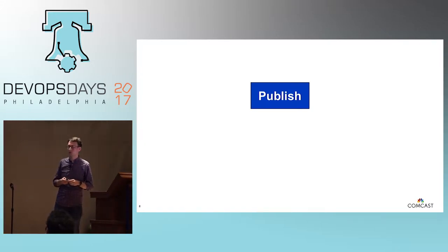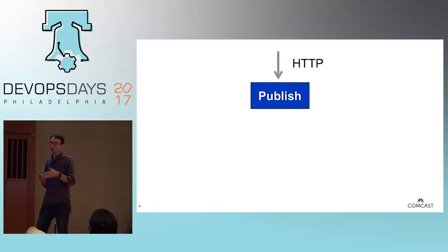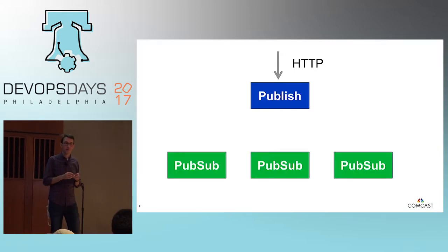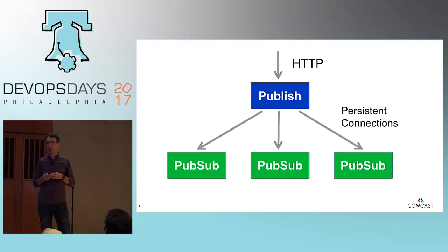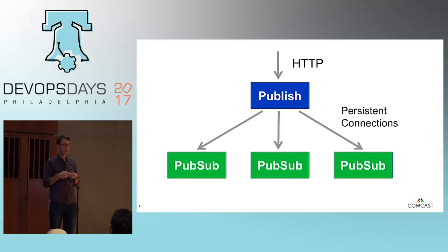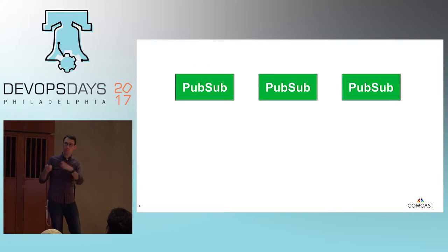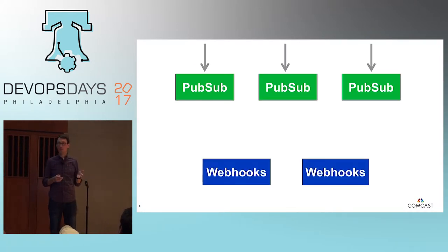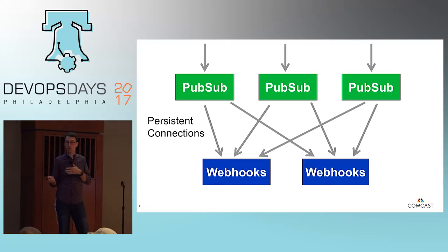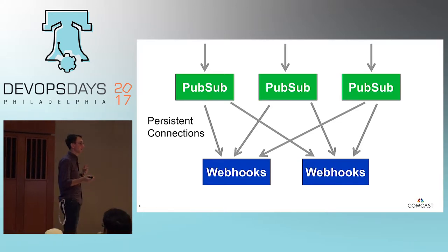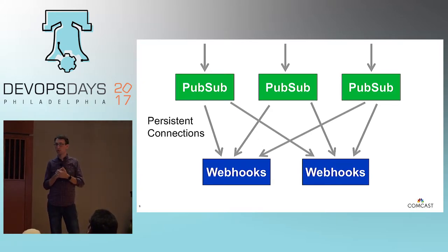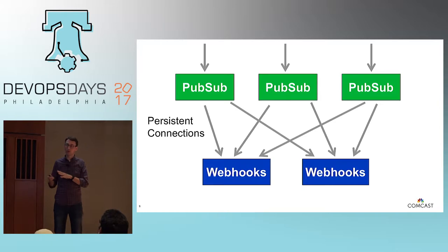A little bit of application architecture: HTTP calls come into the endpoint — we call this publish. There's a set of core servers we call pub-sub, and each of the publish components has a persistent connection to these core servers. When a request comes in, it gets round-robined to one of the core servers, which handle looking up subscriptions and routing to the endpoint adapters — web hooks for HTTP posts, or the mobile adapter for iOS and Android delivery. These persistent connections create a challenge when moving off static VMs into the container world.